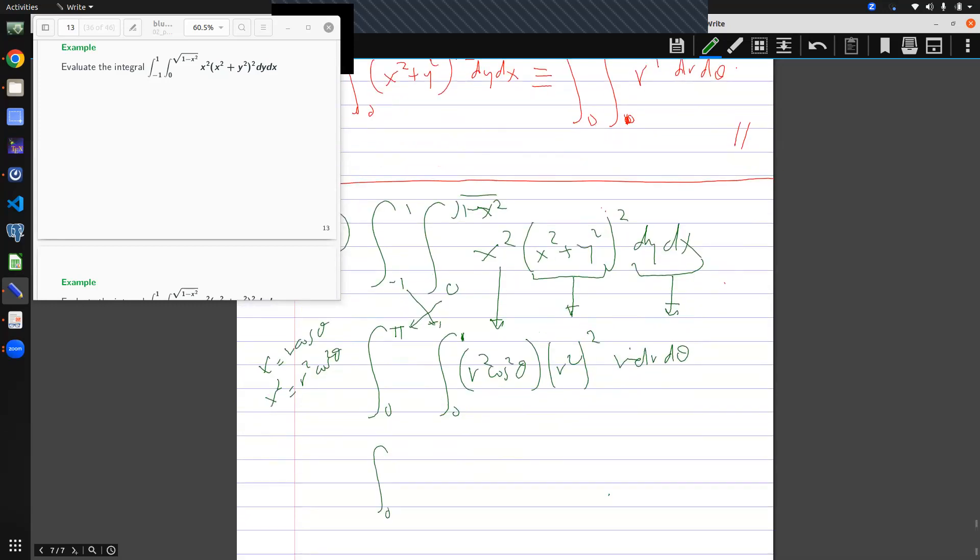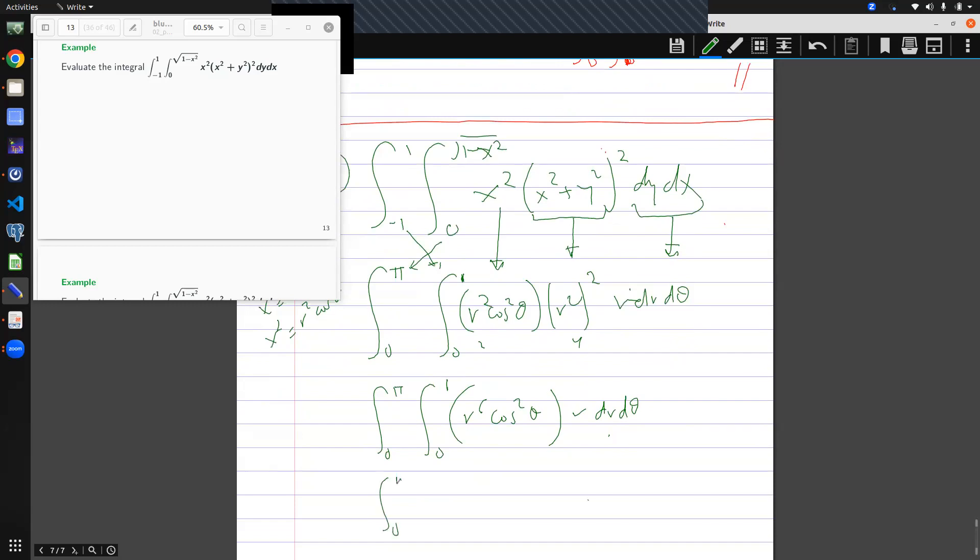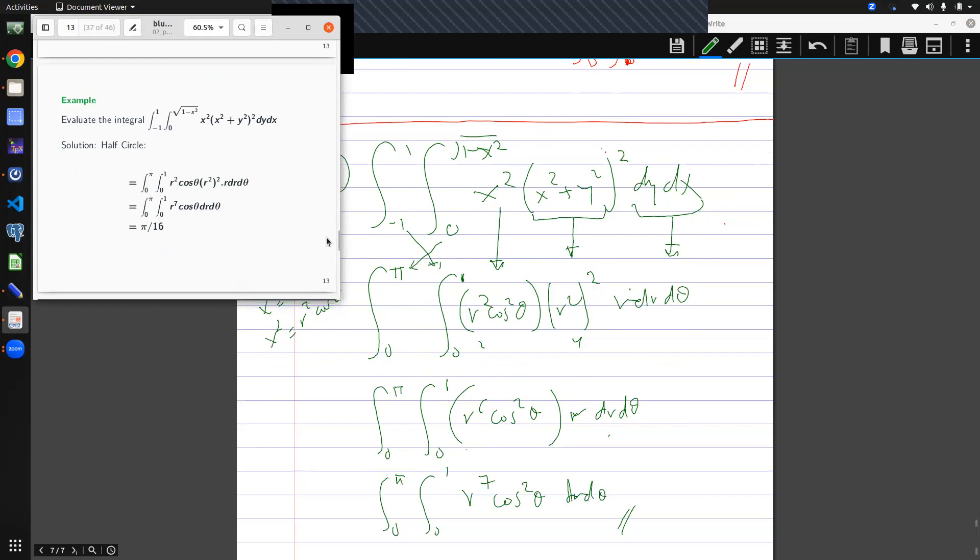We expand. We expand. We are going to get, this gives me four, and this gives me two, so r to the power of six. We expand further. I get r to the power of seven r square theta, r d theta. So instead of solving it in the original problem, I can reduce it this way. And so the answer is pi on 16.